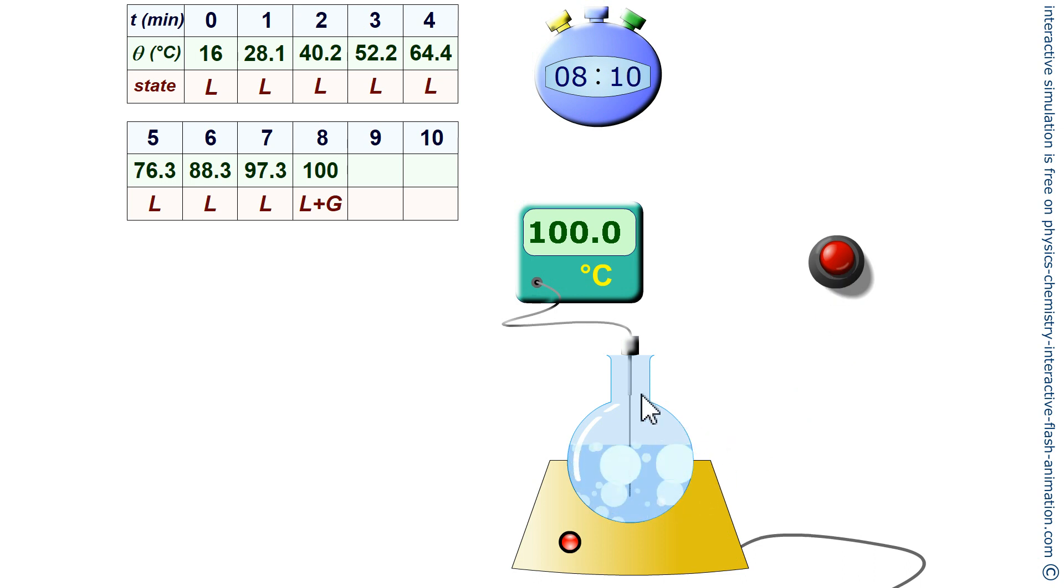100 degrees Celsius. We observe much larger bubbles that burst on the surface of the water. It is boiling. The change of state is in progress, therefore transition from the liquid state to the gaseous state of water.